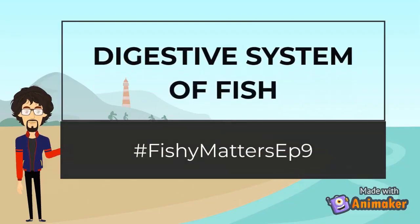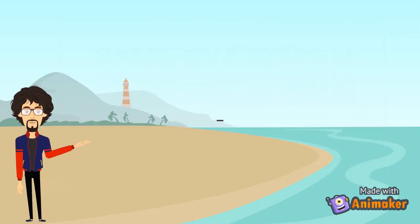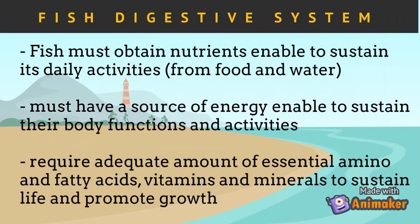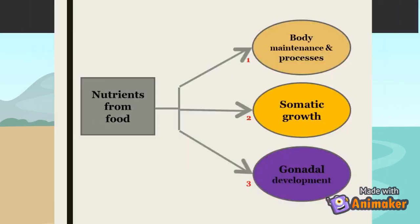The first internal organ system to discuss is the digestive system. In order to survive, fish must obtain nutrients to sustain their daily activities. These nutrients can be extracted from food or water they ingest, and serve as a source of energy to sustain body functions. Adequate amounts of essential amino and fatty acids, vitamins, and minerals are required to sustain life and promote growth. This figure shows the hierarchical order of energy utilization in fish. Once nutrients from food are absorbed, they will be used first for body processes and maintenance.